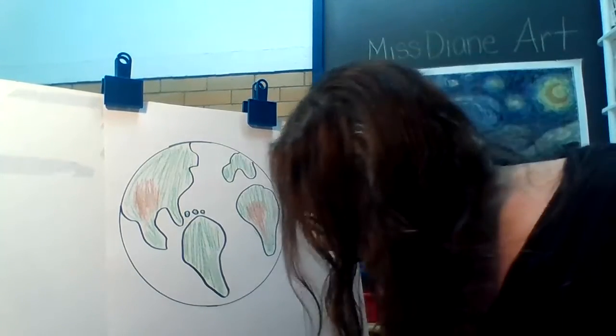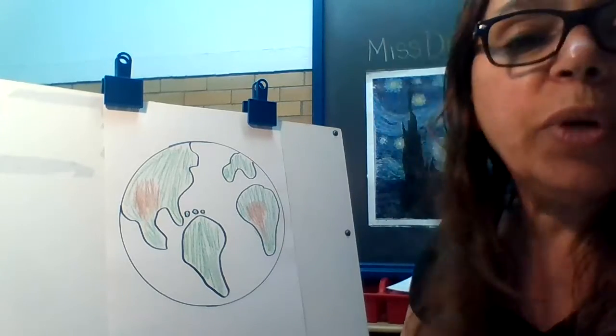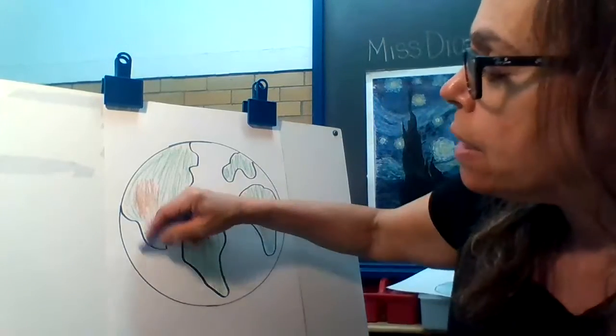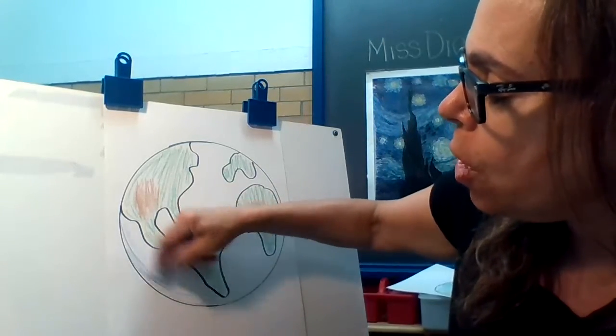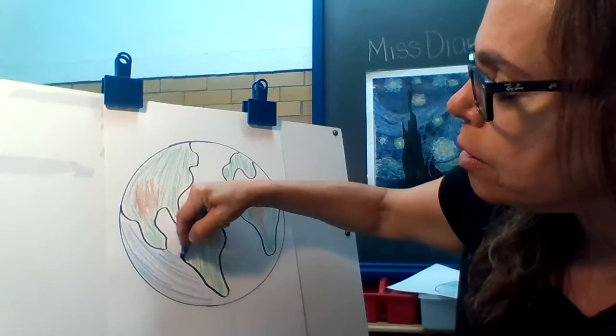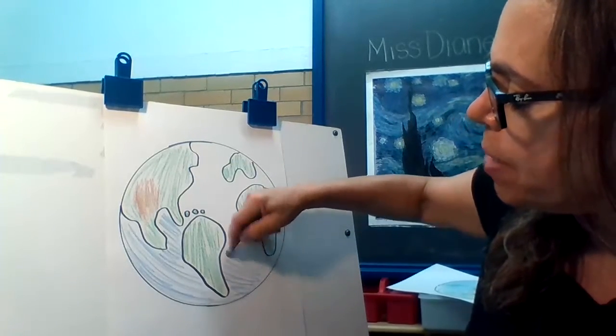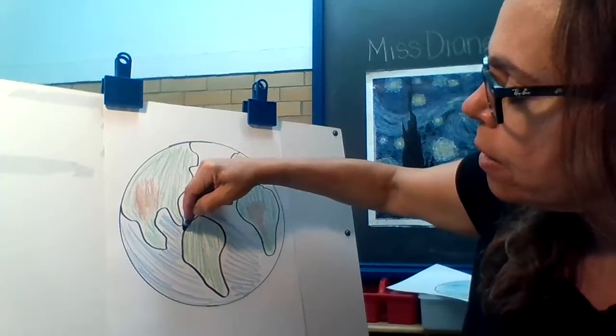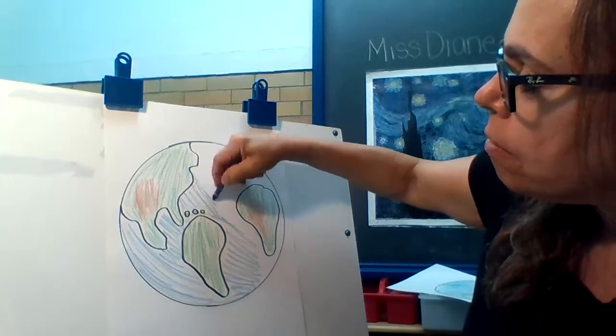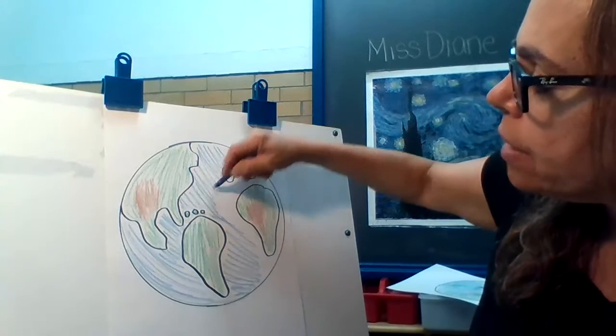Then the ocean will be blue. I'm going to color in all of the water blue. All of the empty space around the land is water, and I'm going to color it in blue.